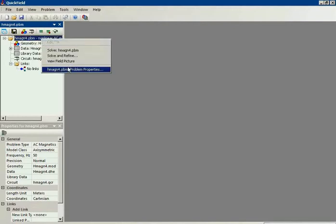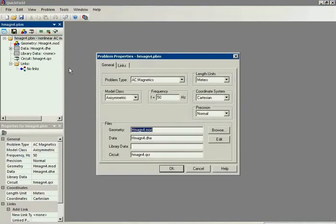This is QuickField. I open the problem properties dialog and you can see that the model class is axisymmetric.